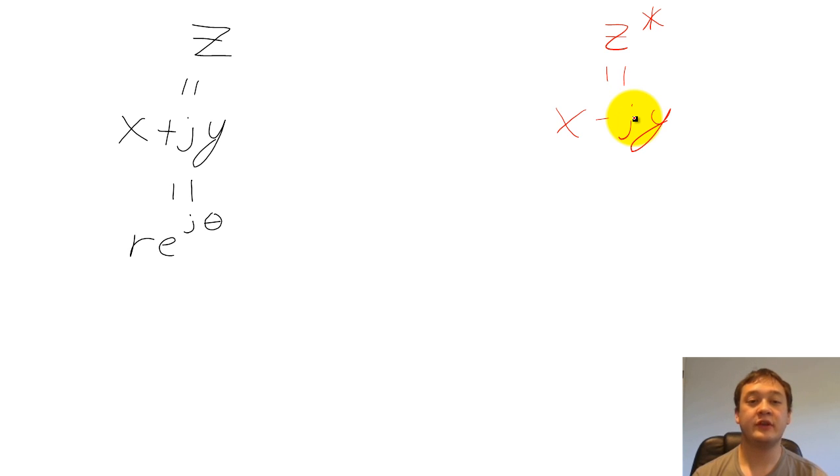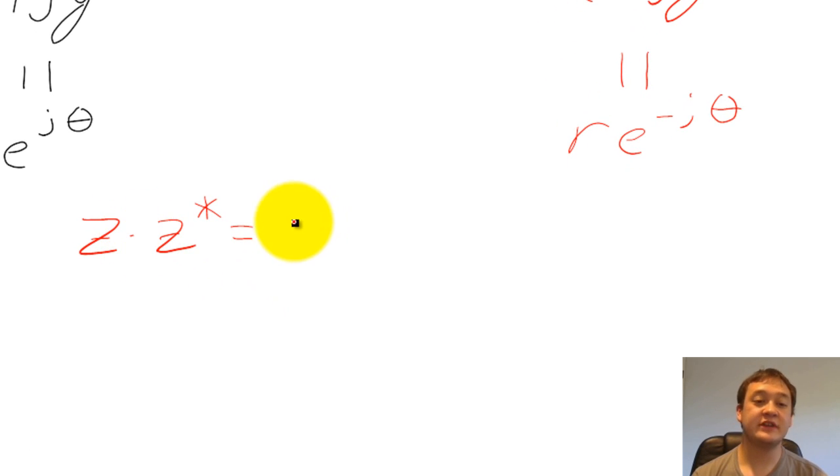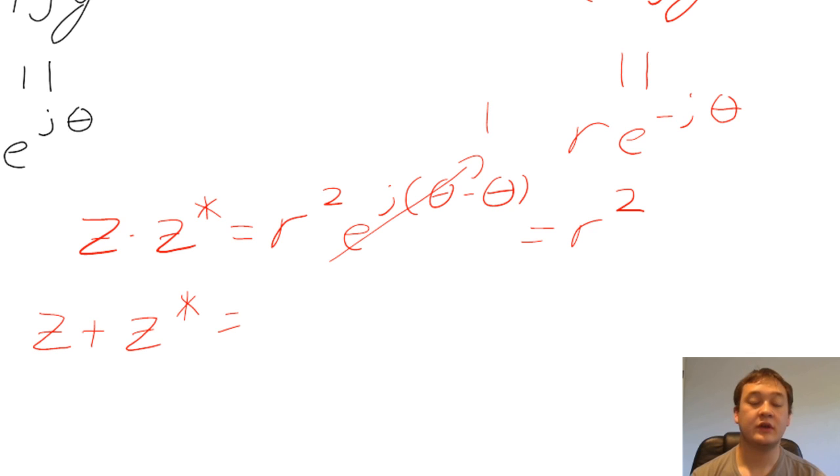In polar coordinates, we negate the phase of z to create the complex conjugate. The complex conjugate has some handy computational properties. For example, z times z star simplifies to r squared, and z plus z star simplifies to 2x.